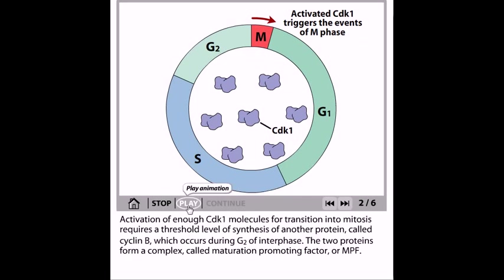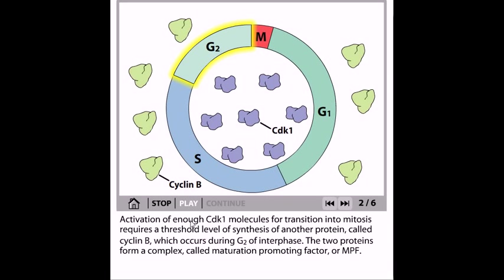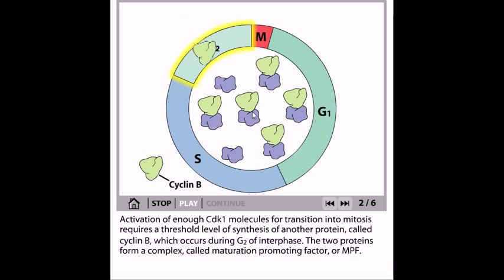This protein is called cyclin B, which occurs during G2 or the interphase. These two proteins form a complex called the maturation promoting factor or mitotic promoting factor, also denoted as MPF.